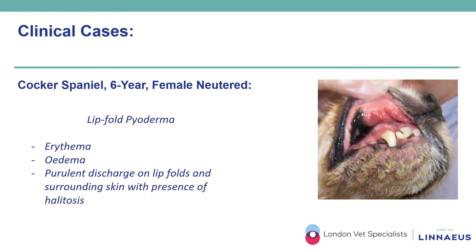A six-year-old female neutered Cocker Spaniel presented with a long history of progressive erythema, edema and purulent discharge present on the lip folds and surrounding skin, with additionally halitosis. Breed predisposition and elimination of other causes led to a diagnosis of lip fold dermatitis, which as previously described is due to the conformation of the region predisposing to friction and secondary microbial overgrowth and infections.